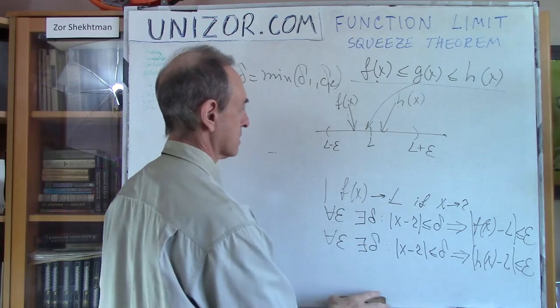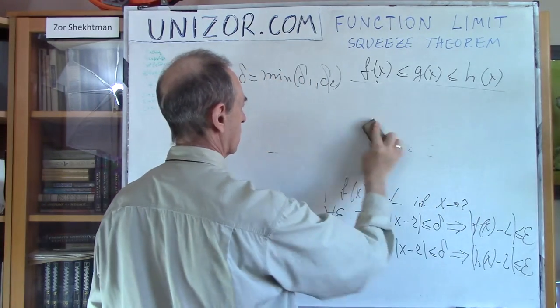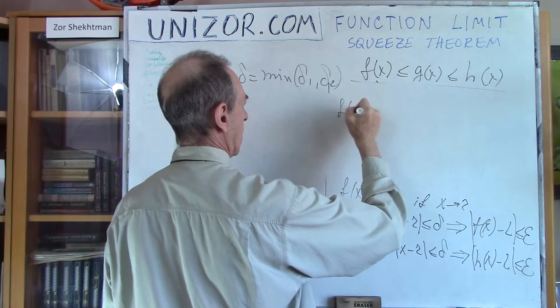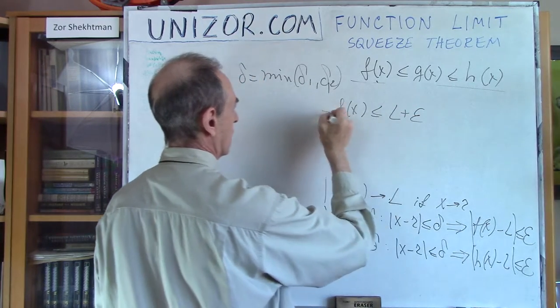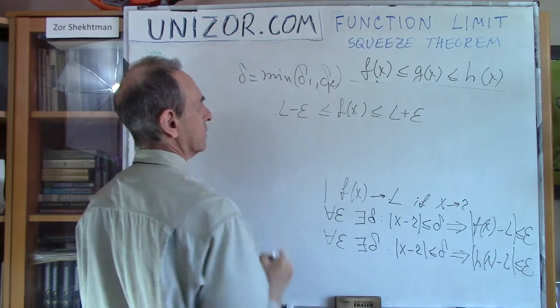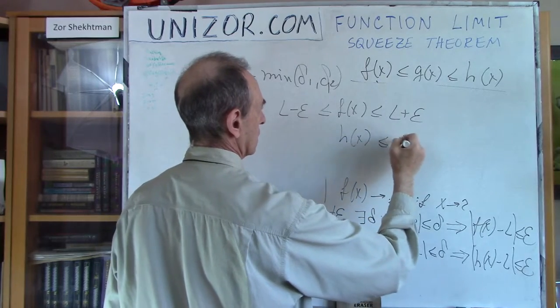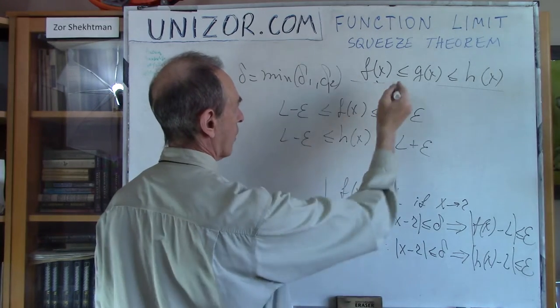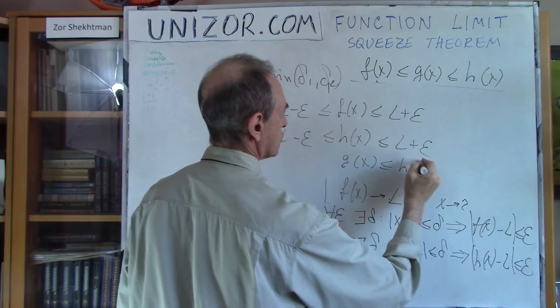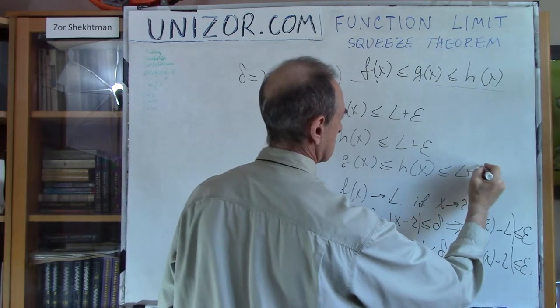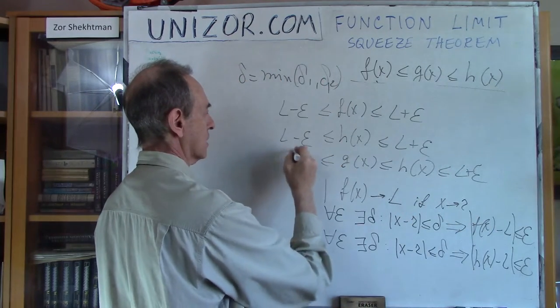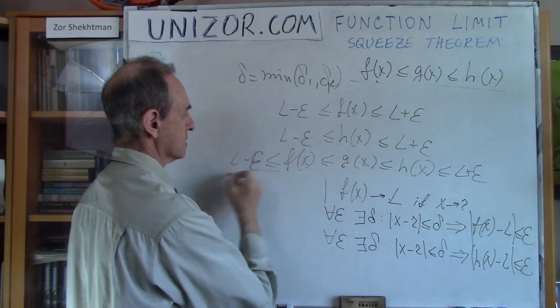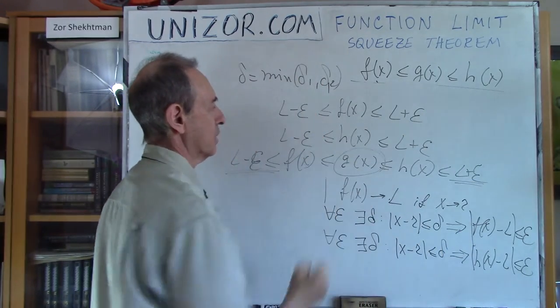So that's kind of a graphical explanation. A little bit maybe less graphical would be the following. Purely algebraic kind of logic. So from this we know that f of x less than l plus epsilon and greater than l minus epsilon. From this we know that h of x is less than l plus epsilon. But g of x is greater than f of x. And f of x is greater than l minus epsilon. So we got again the same thing from l minus epsilon to l plus epsilon would be our g of x.